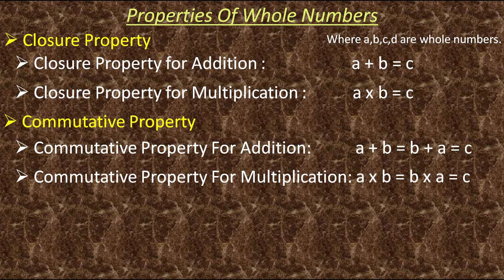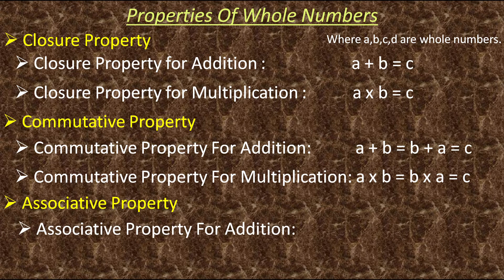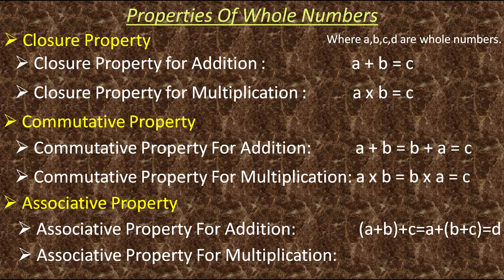Next comes associative property. Associative property for addition says that the grouping of numbers will never change the result of addition. Same way, associative property for multiplication says that the grouping of numbers will never change the result of multiplication.